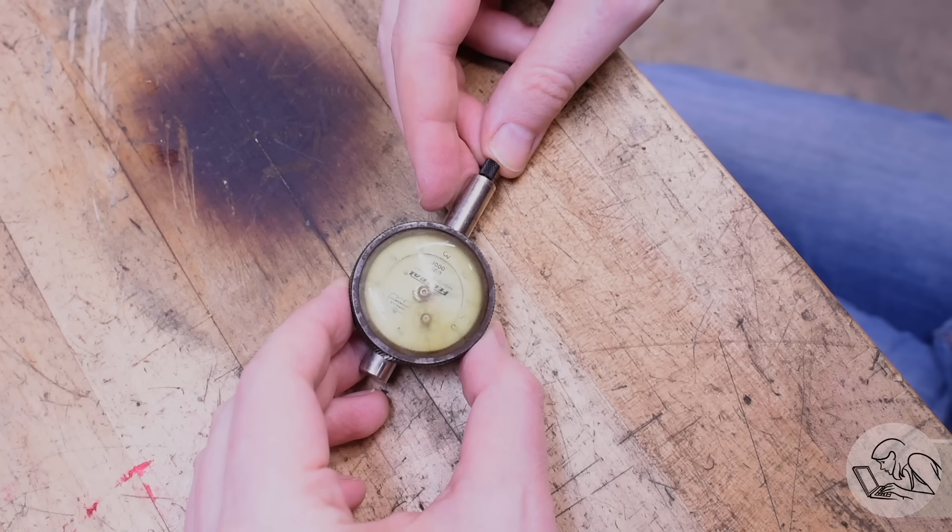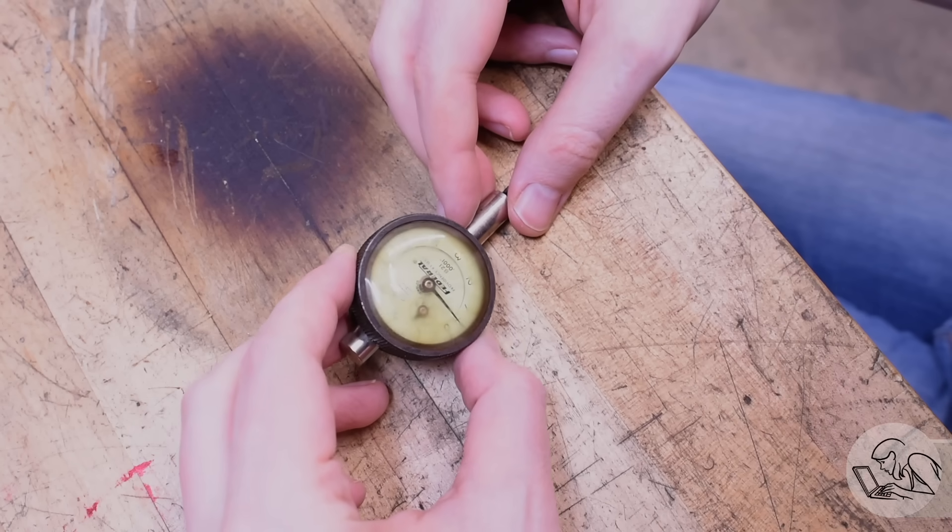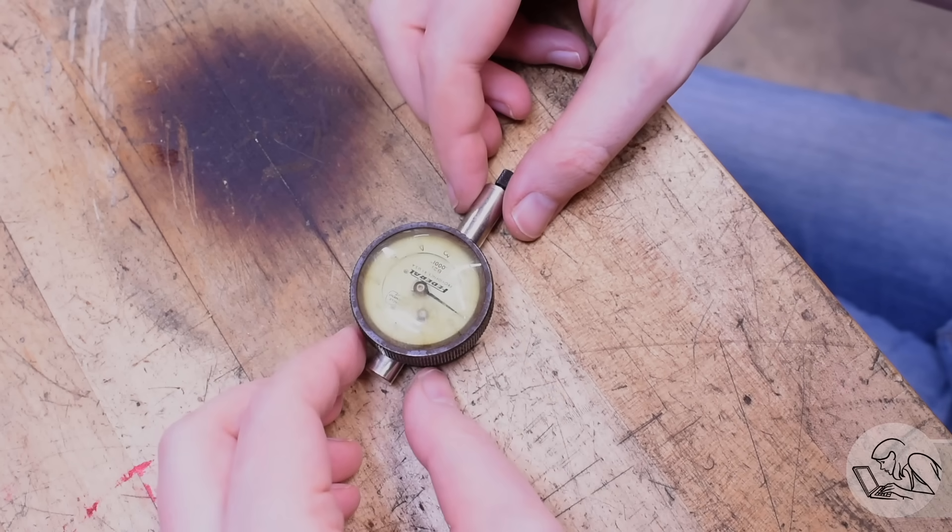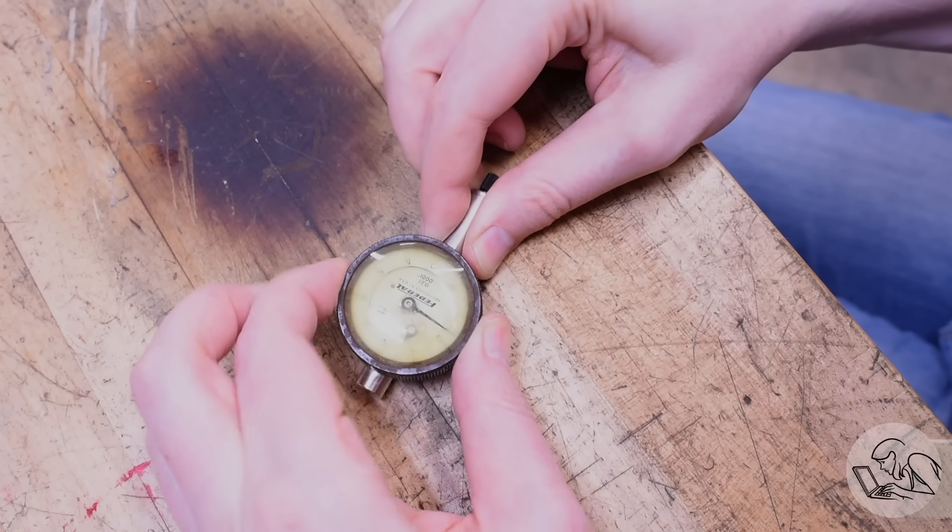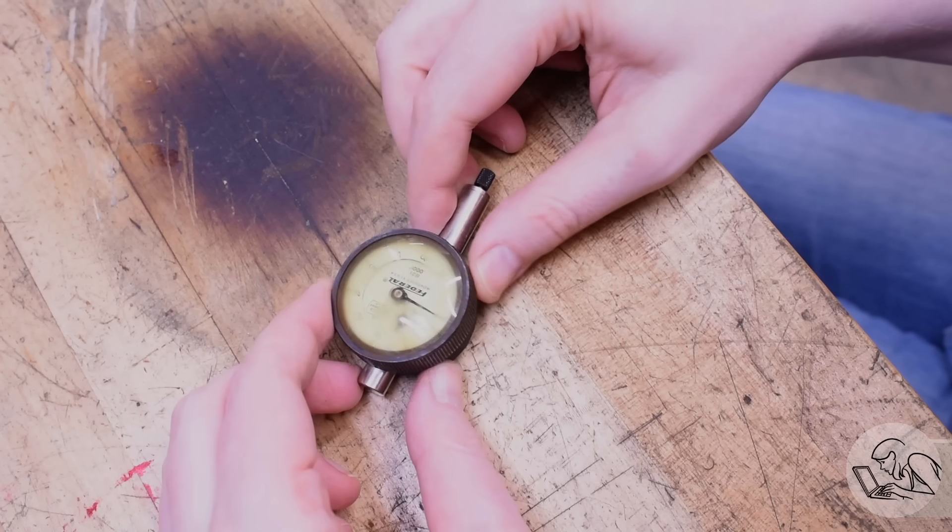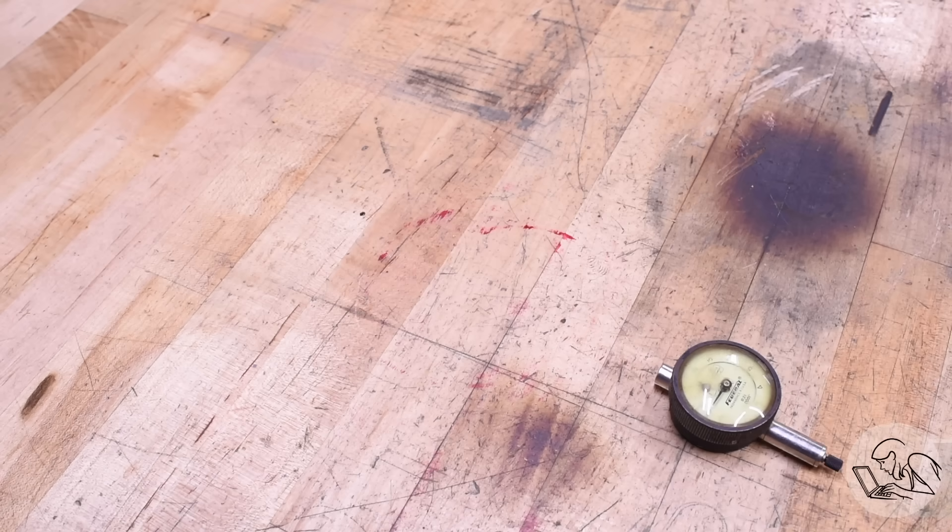I acquired this federal B21 tenths indicator off eBay. It's listed in non-working condition. The mechanism is very, very sticky and the bezel is completely seized. And the bezel is almost opaque. You can hardly see through it. Let's see if we can breathe new life into it.